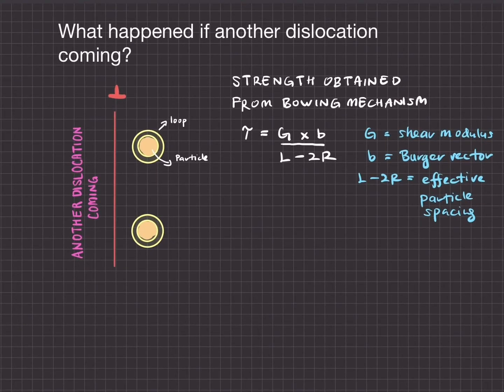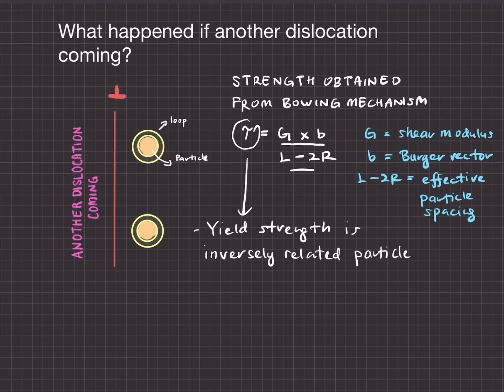The yield strength is inversely related to particle spacing. As we can see here, the radius of the particle is in the denominator. So when we have finer particles, the strength that we get will be higher. The strength will increase.